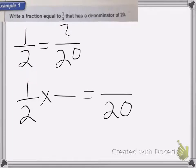So if we look, 2 times what is 20? Well, we know that 2 times 10 is 20, and whatever I do to the bottom, I have to do to the top. 10 over 10.